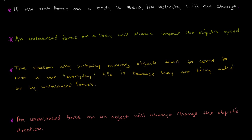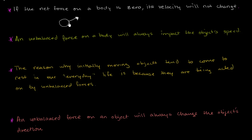Let's think about these statement by statement. Our first statement: if the net force on a body is 0, its velocity will not change. This is absolutely true — it's actually another way of rephrasing Newton's first law. If I have some object traveling through space with some velocity, and we assume deep space with no gravitational interactions and absolute vacuum, this thing will travel on forever. Its velocity will not change — neither its speed nor its direction.